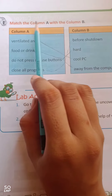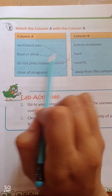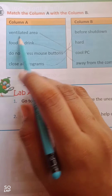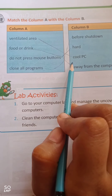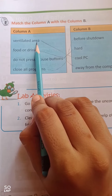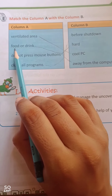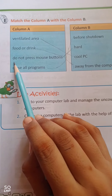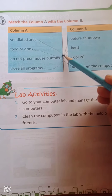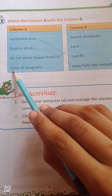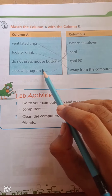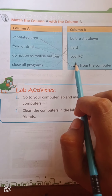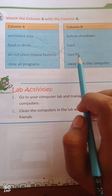Exercise E: Match column A with column B. Number 1: Ventilated area — matches with cool PC. Number 2: Food or drink — matches with away from the computer. Number 3: Do not press mouse buttons — matches with hard. Number 4: Close all programs — matches with before shutdown. Write these matches in your copy in the same way. That's all about this chapter — see you in the next video.